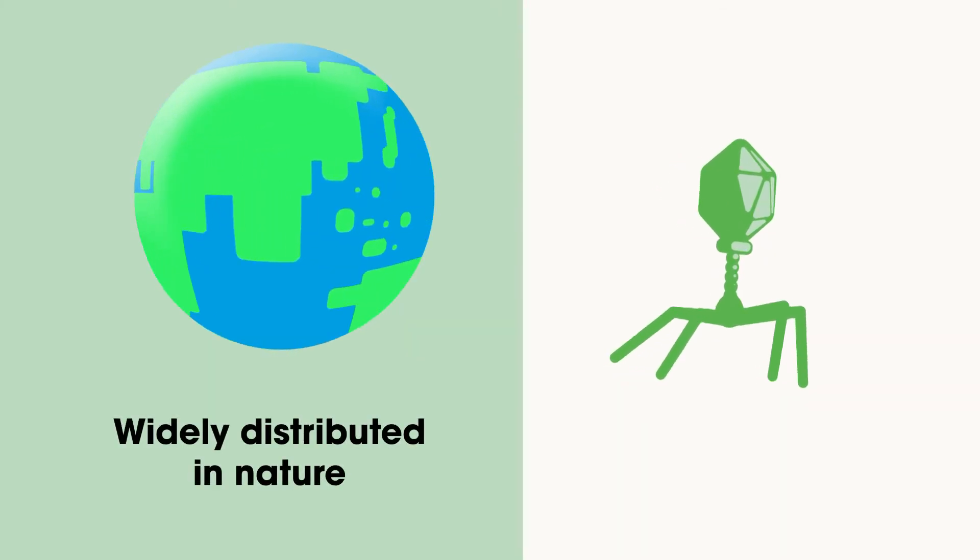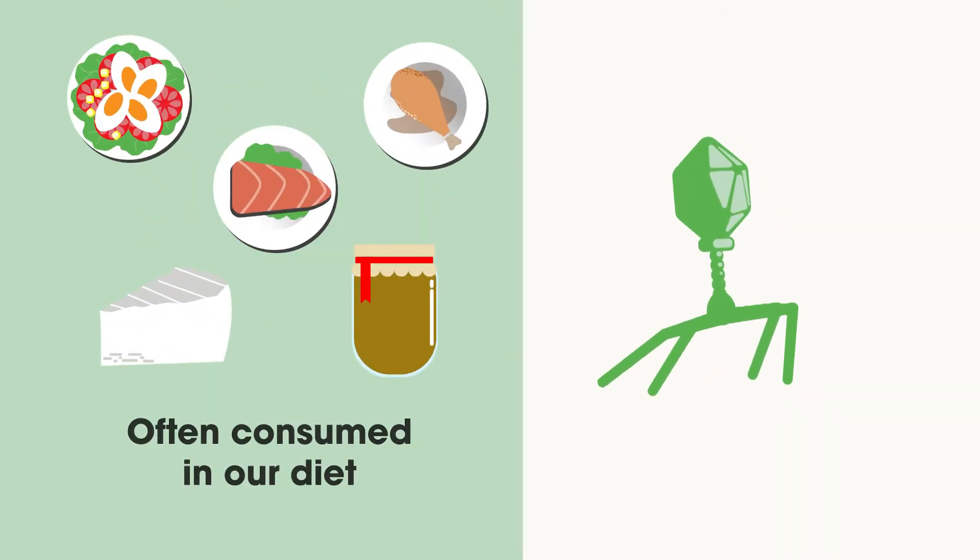Phages are the most abundant organisms on Earth. They are everywhere, even in the foods we eat.